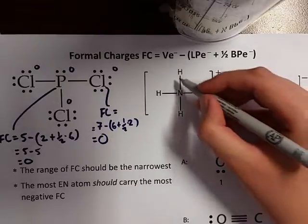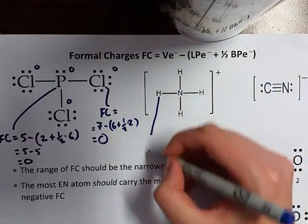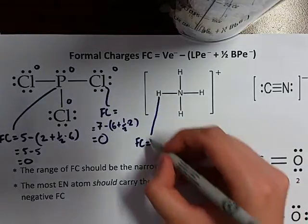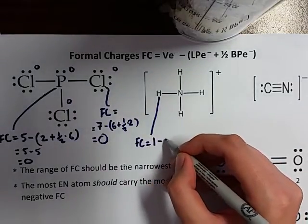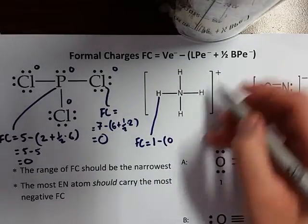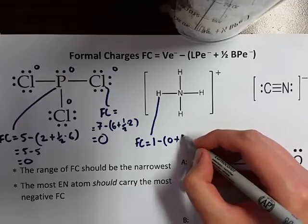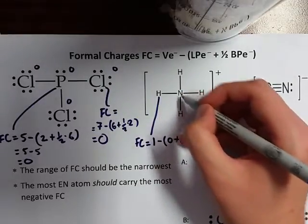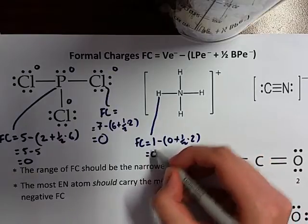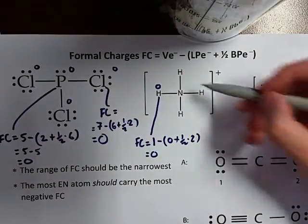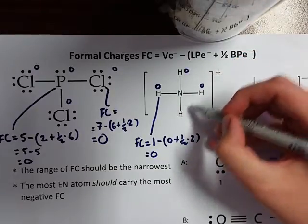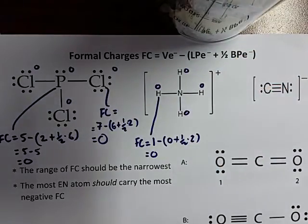Now let's try a more complex example. For hydrogen, formal charge: hydrogen generally has one valence electron, minus — does it have any lone pair electrons? No. Does it have any bonding pair electrons? Yes, it's got two bonding pair electrons which it shares. One minus one gives you a charge of zero. Because all of these hydrogens are in the same environment, we can assume all four formal charges are the same.